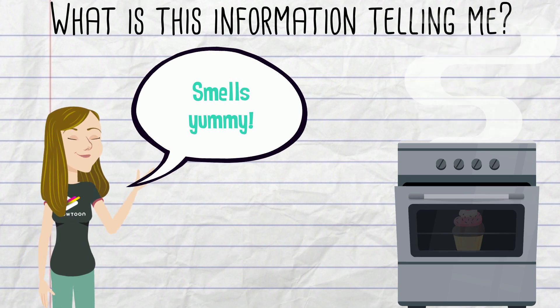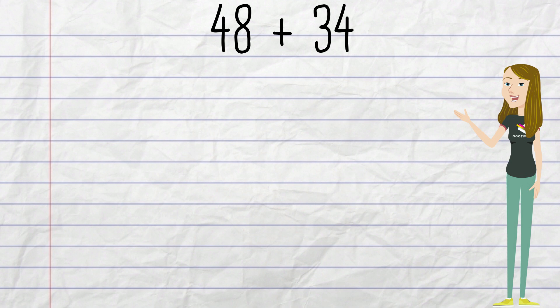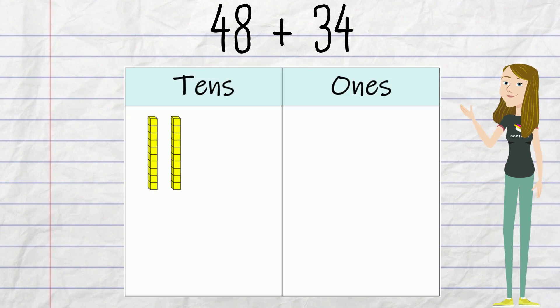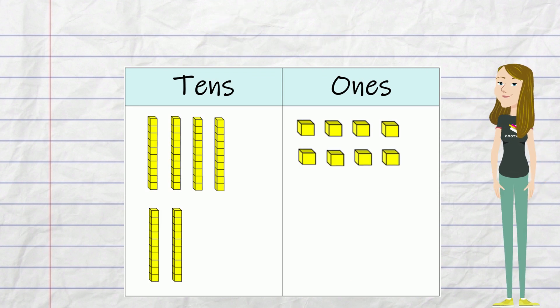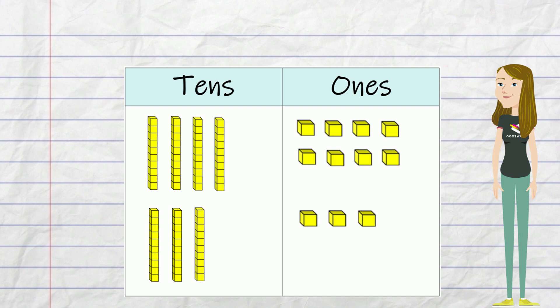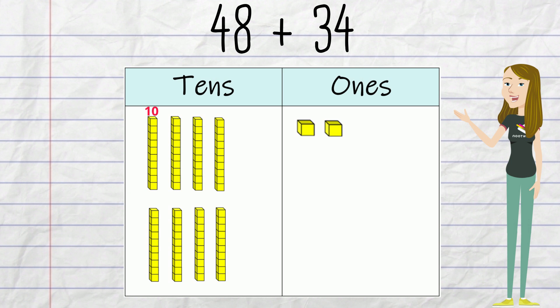Let's add 48 and 34. I know 48 is made up of four tens and eight ones, and 34 is made up of three tens and four ones. I see that I have 12 ones, so I can trade 10 ones for a ten stick. I see I have 10, 20, 30, 40, 50, 60, 70, 80, 81, 82 cupcakes so far.